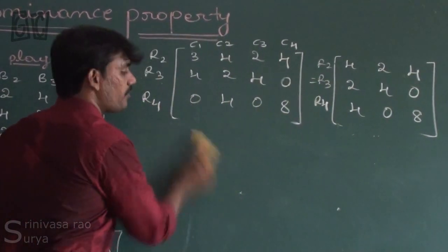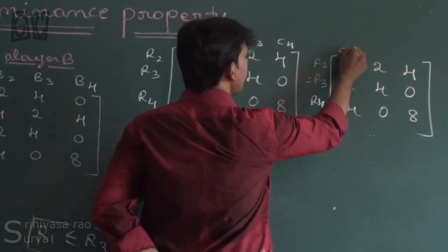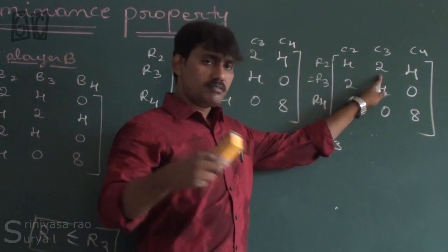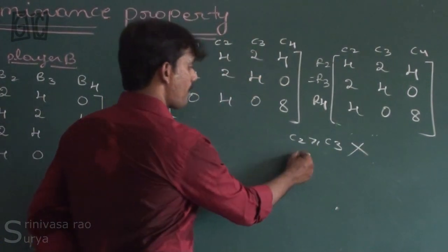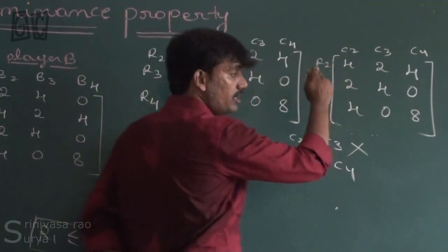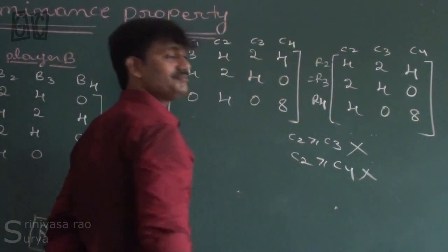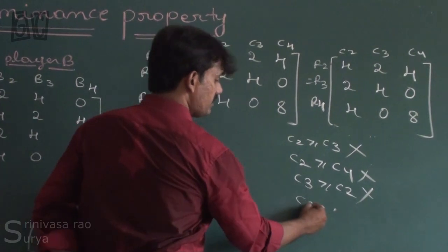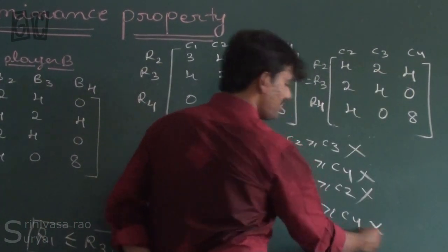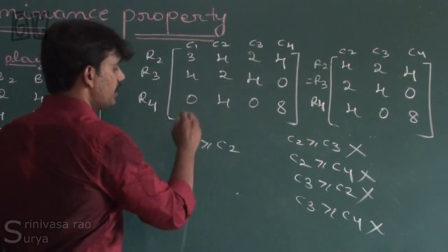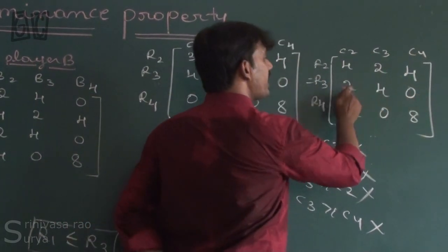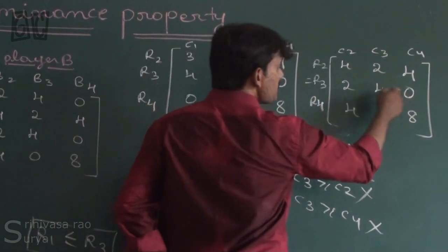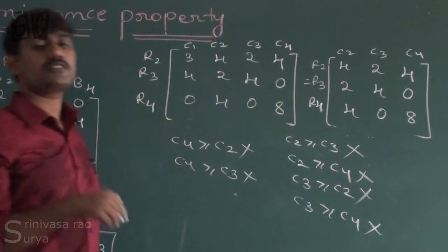It's a tricky problem. Now applying column comparisons. C2 ≥ C3: 4 > 2 but 2 is not greater than 4 — fails. C2 ≥ C4: 4 equals 4, 2 > 0 but 4 is not greater than 8 — fails. C3 ≥ C2: 2 is not greater than 4 — fails. C3 ≥ C4: 2 is not greater than 4 — fails. C4 ≥ C2: 0 is not greater than 2 — fails. C4 ≥ C3: 4 > 0 but 0 is not greater than 4 — fails. All row and column operations are not satisfied.